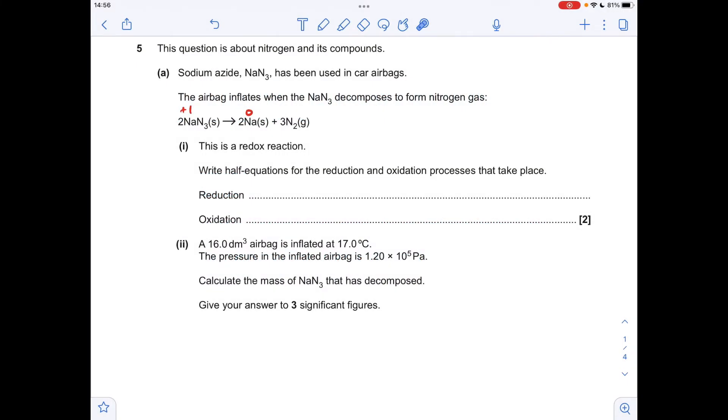So I'll make a start with the half equations for the reduction and oxidation processes. We've got the oxidation numbers for sodium starting at plus one going to zero, so it's been reduced. The sodium one plus ion has gained one electron.